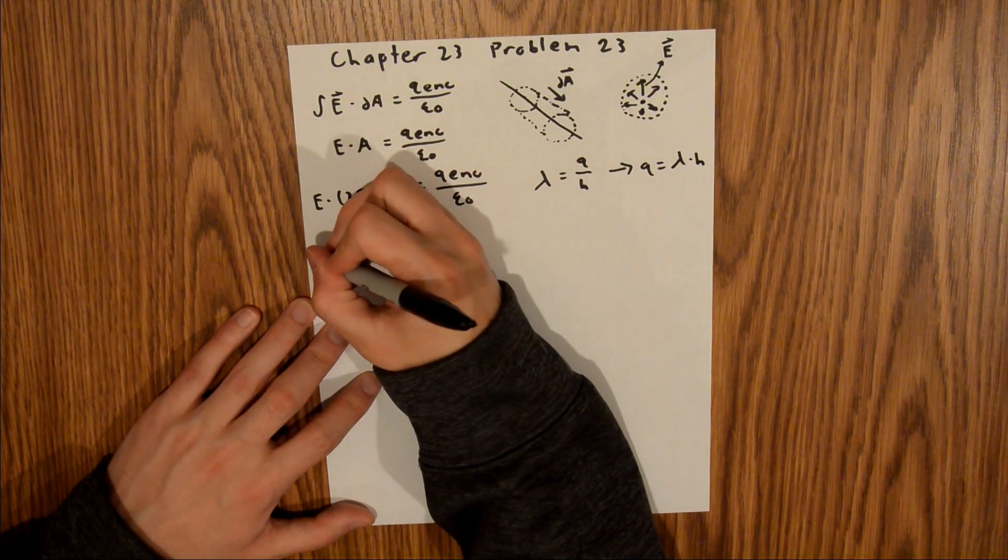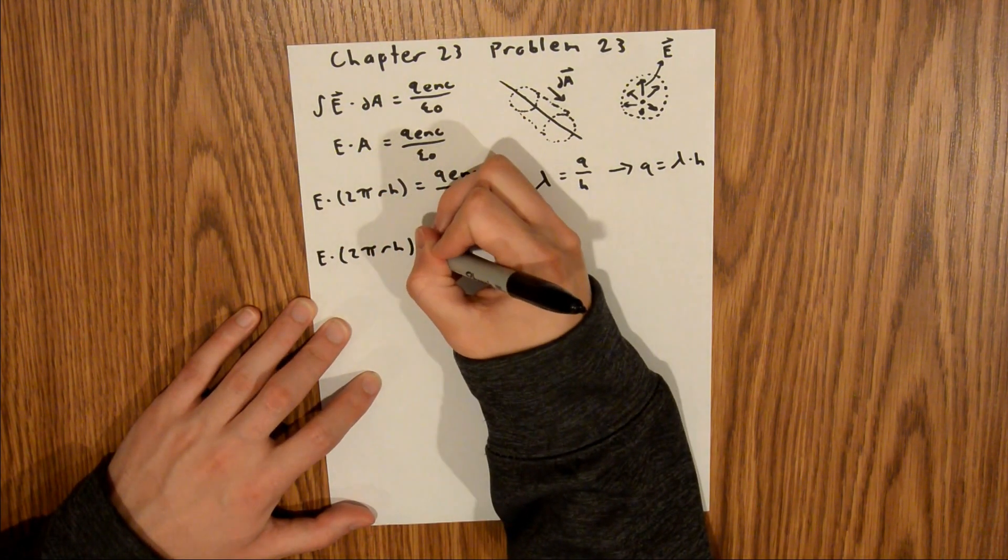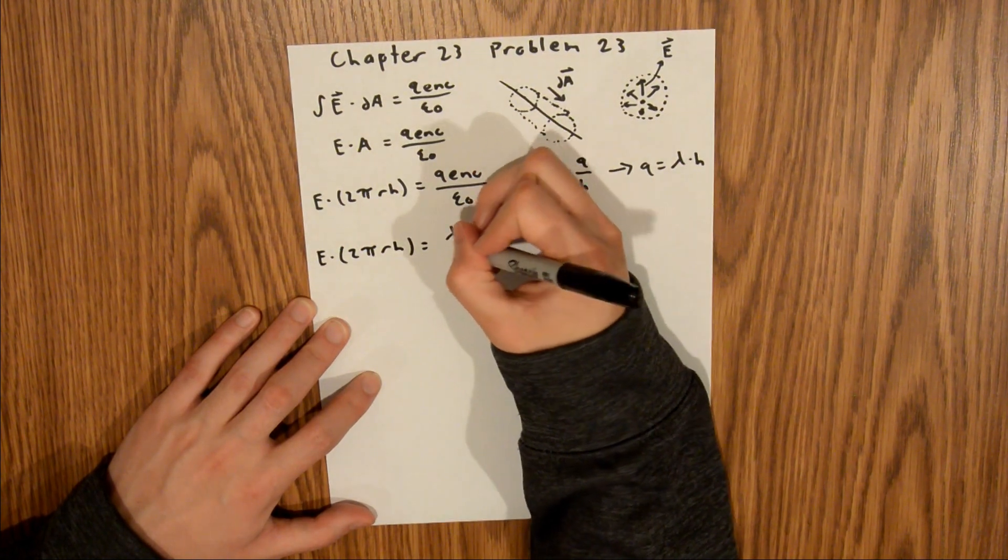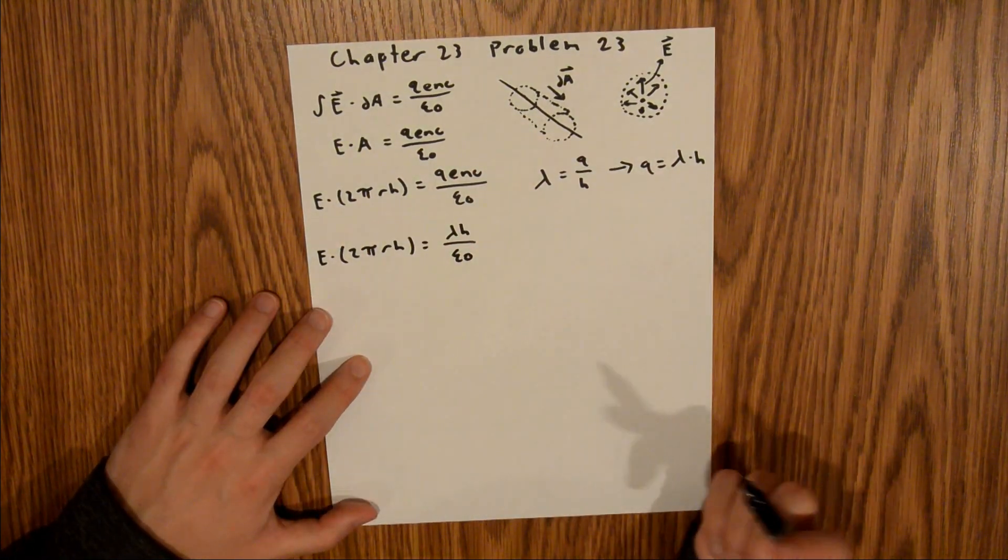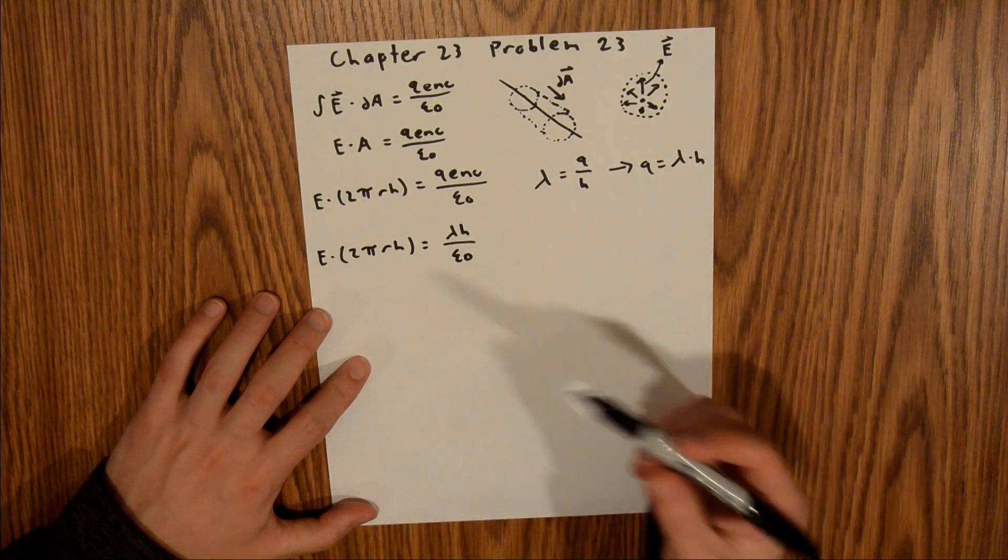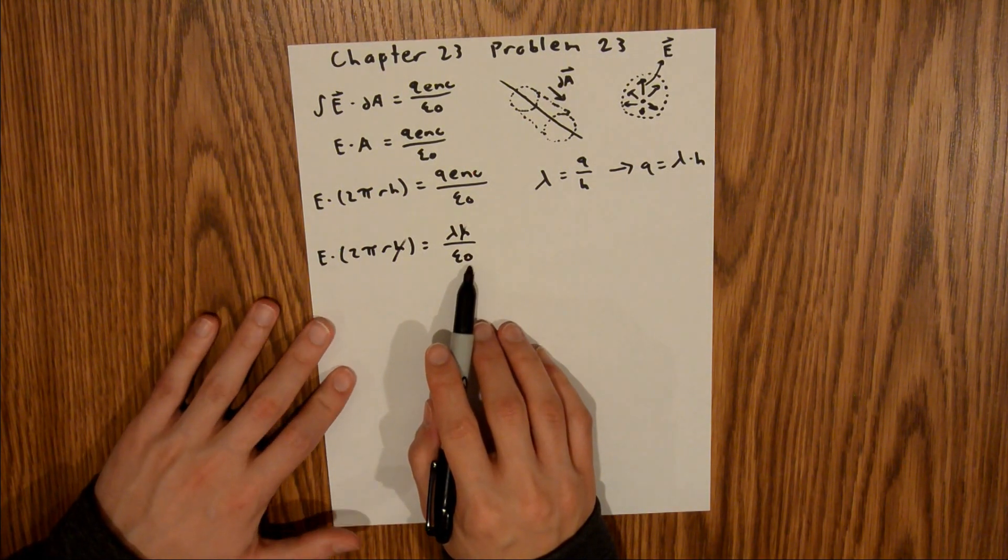And so now what we can do is plug this into here. And so that's going to give us E times 2 pi r h is equal to lambda H over epsilon naught. And so now if you notice, we actually have an H on both sides, and so those can go. And then we can also multiply both sides by epsilon naught,